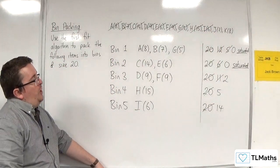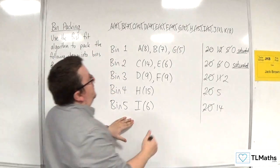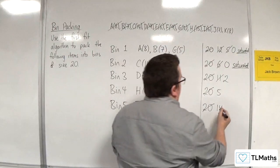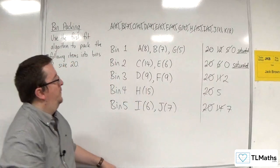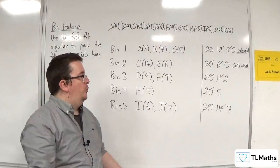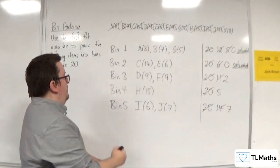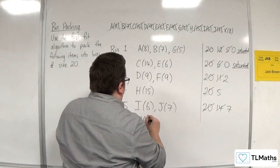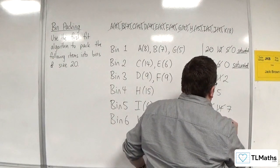Then we've got J with seven coming along. It can't go into bins one, two, three, or four, but it can go into bin five. So J seven — 14 take away seven gets me down to seven. And finally we've got K eight, but unfortunately it can't go into bins one, two, three, four, or five. So I'm going to have to go to bin six. K is eight — it was 20 but it's now down to 12.